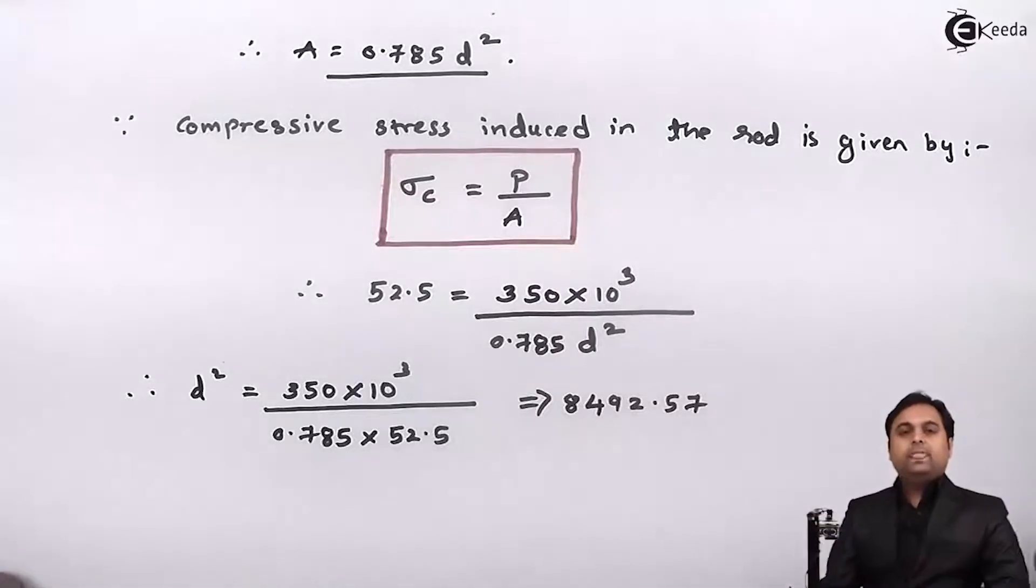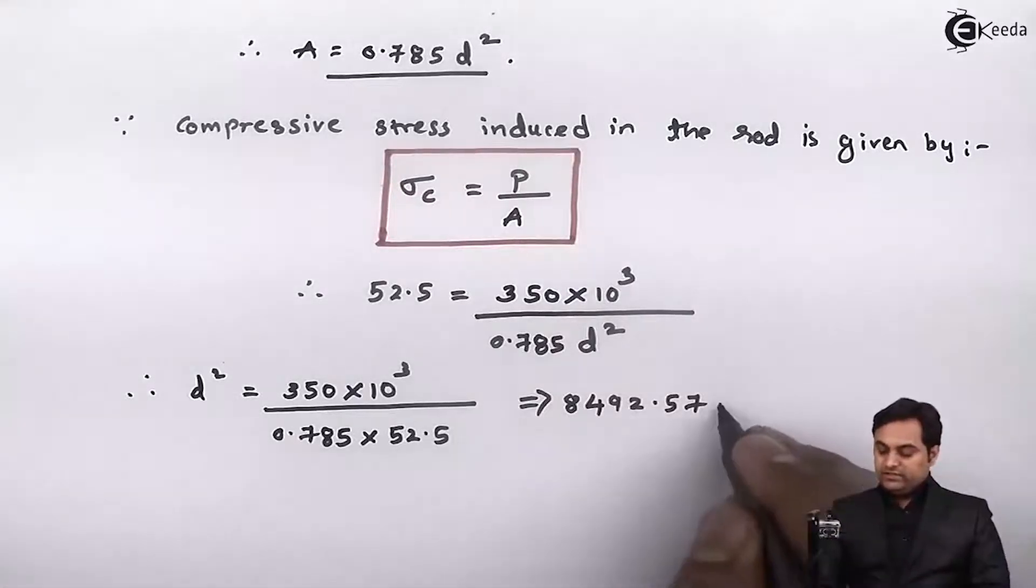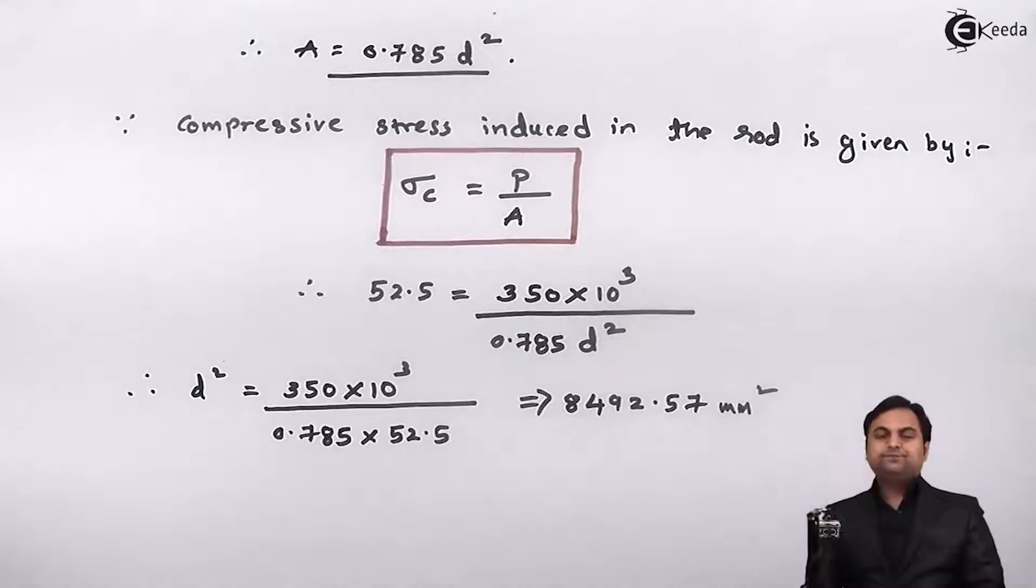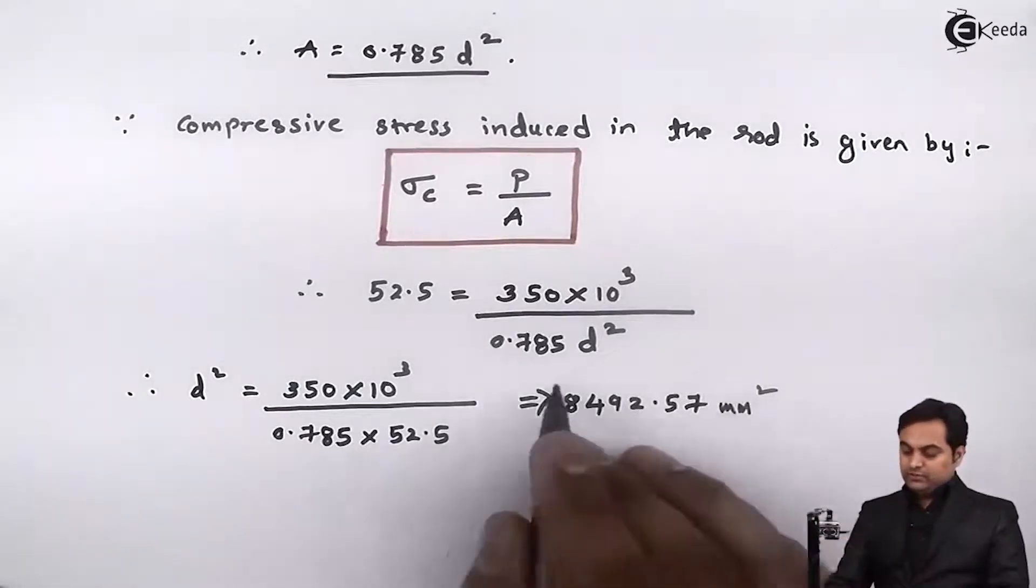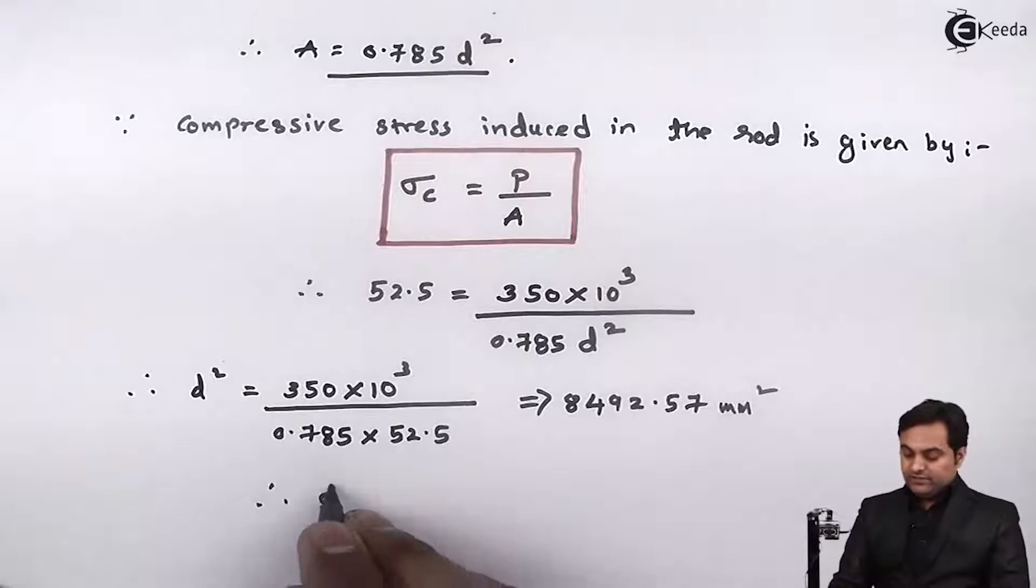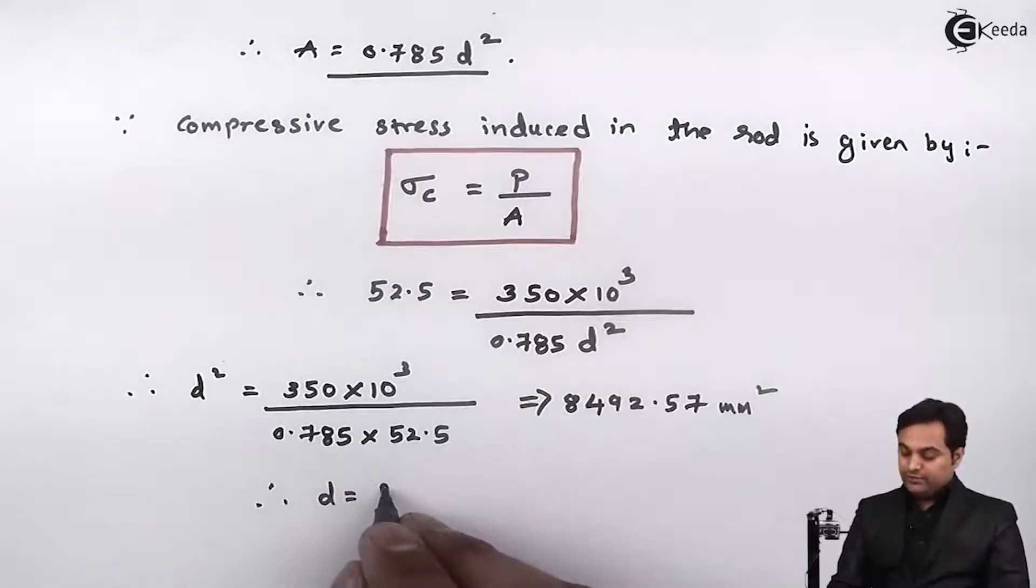From this I get d square equals 8492.57. Taking the square root, my answer comes out to be 92.16 mm.